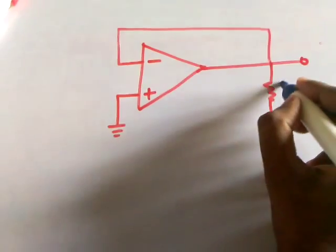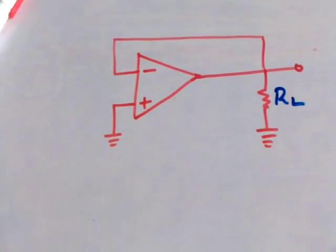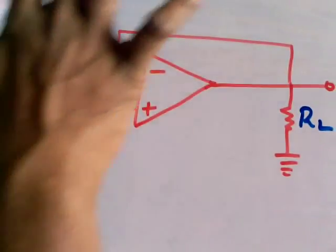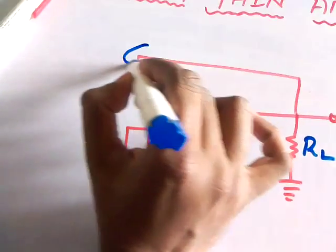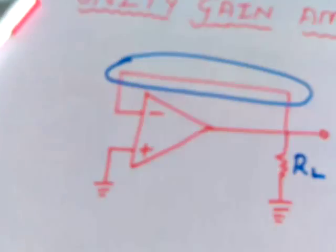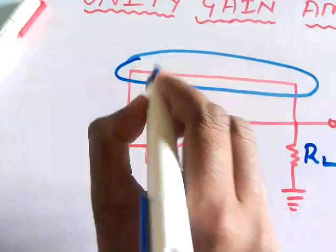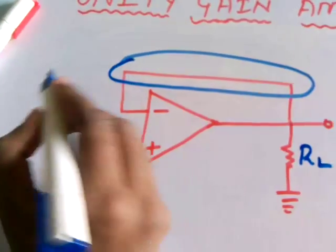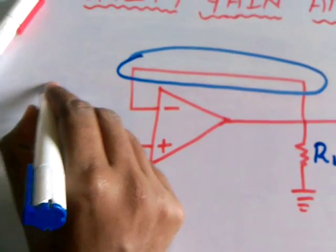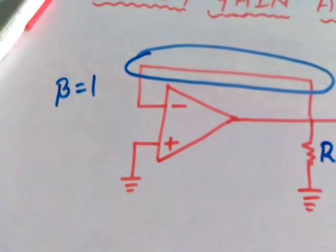Here, this is our load resistance. This is the schematic diagram. Now, by observing this, we can easily conclude that the amplification factor, that means the feedback factor of this device, beta, is equal to 1.